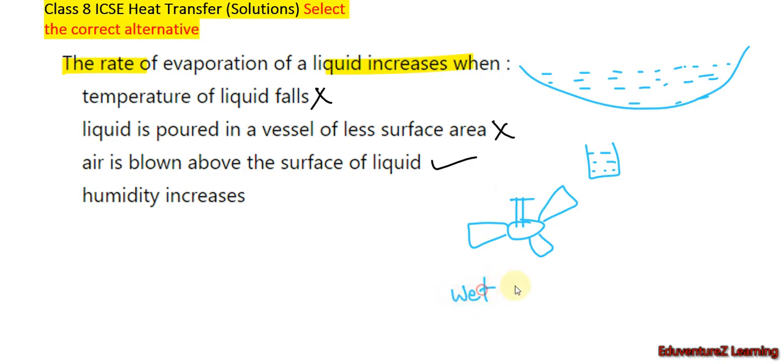Suppose there is a wet floor, and you want that the wet floor should dry easily or it should dry fast. You turn on the fan and the rate of evaporation increases and it dries fast as compared to if the fan is switched off. That is why if air is blown above the surface of a liquid then the rate of evaporation increases.